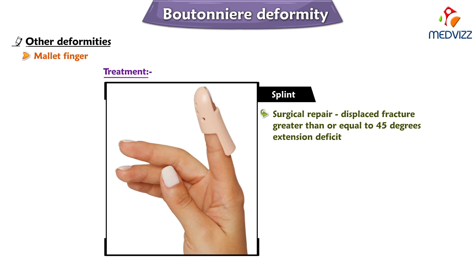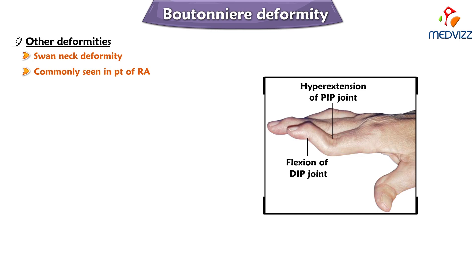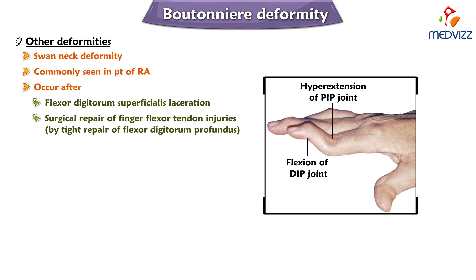Swan neck deformity is a finger deformity mainly caused by hyperextension of the proximal interphalangeal joint and flexion of the distal interphalangeal joint. It is commonly seen in patients with rheumatoid arthritis, but can also occur after flexor digitorum superficialis laceration or tight surgical repair of the flexor digitorum profundus. These are the key differences between boutonnière deformity, mallet finger, and swan neck deformity.